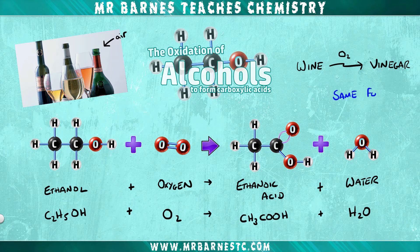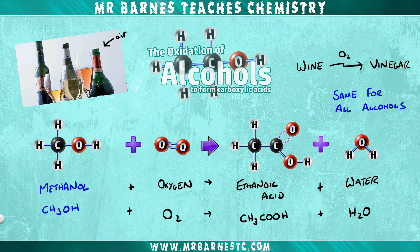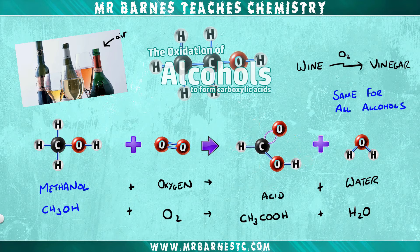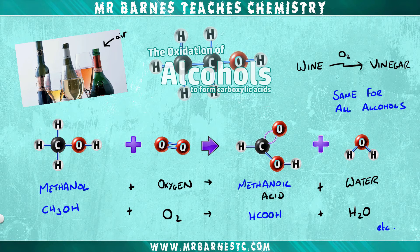This mechanism is the same for all alcohols. If you had methanol CH3OH, it would still react with oxygen, this time forming methanoic acid HCOOH. That is how carboxylic acids are formed from alcohols, and it's also why fermentation needs to be anaerobic — no oxygen, or it turns into vinegar.